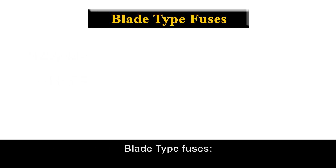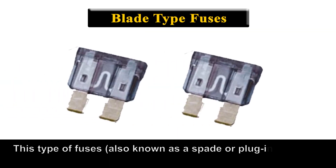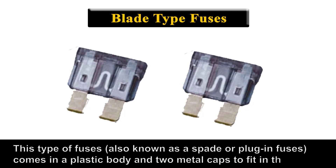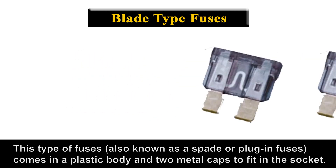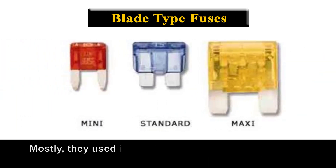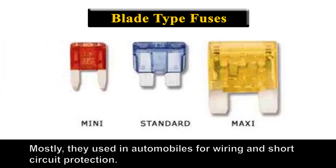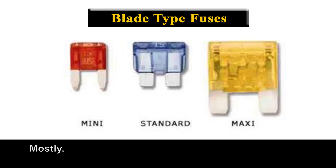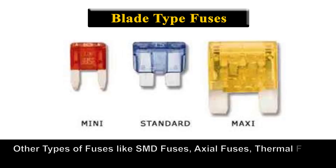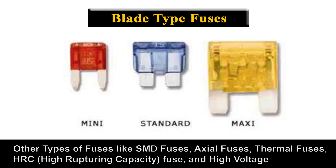Blade type fuses, also known as spade or plug-in fuses, come in a plastic body with two metal caps to fit in a socket. They are mostly used in automobiles for wiring and short-circuit protection. Other types of fuses include SMD fuses, XL fuses, thermal fuses, high-capacity fuses, and high-voltage fuses.